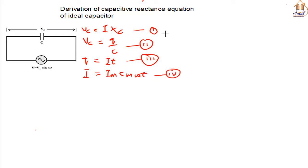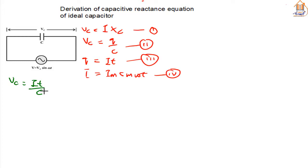These are the equations needed to derive the capacitive reactance equation of an ideal capacitor. Now, let's plug equation 3 into equation 2. If we do that, we're going to have our VC equal to I times T all over C. Let's call this equation 5.